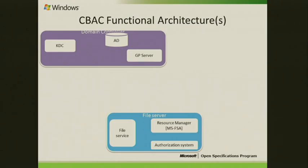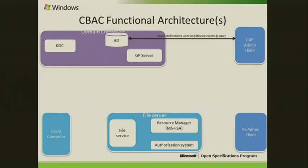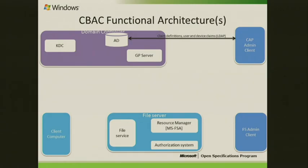Now I'll talk about the functional architecture and what protocols are involved in the CBAC infrastructure. The entities involved in CBAC infrastructure are: the file server, the domain controller, the client computer, the central access policy admin client, and the file server admin client. The admin client defines the claim definitions — what claims you want to invoke. For example, if a user account has a thousand attributes, as a central access policy admin you don't want to fetch all thousand attributes onto the user's token. As part of claim definition, you define what claims you want to have in the central access policy conditions.